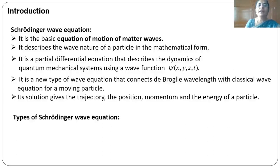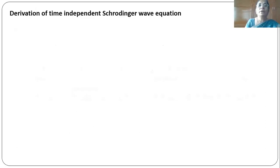There are two types of Schrödinger wave equation — one is time independent and the other is time dependent Schrödinger wave equation. In today's class let us learn how to derive the time independent Schrödinger wave equation.